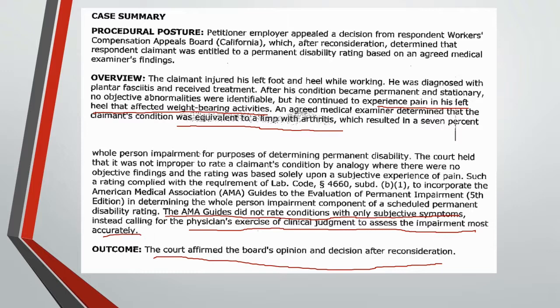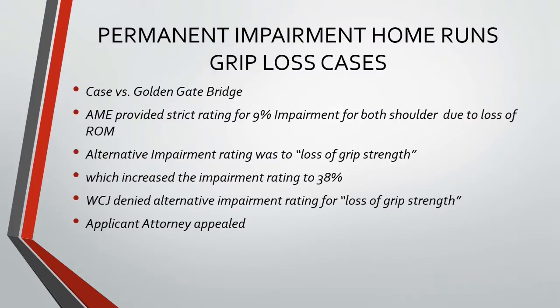Again in this case, the agreed medical evaluator's opinions are given great weight, especially when the alternative impairment rating remains within the four corners of the AMA guides, making that alternative rating consistent with the law which requires incorporation of the AMA guides. Finally, there is the case versus Golden Gate Bridge. In my opinion, this is one of the most fascinating applications of an alternative impairment rating, opening the door for an infinite number of possibilities of using the four corners of the AMA guides to rate impairments even when the alternative discusses a body part unrelated to the body part in question.